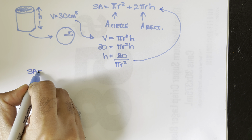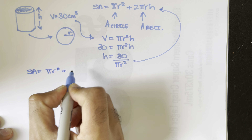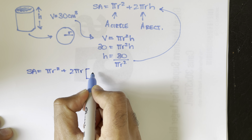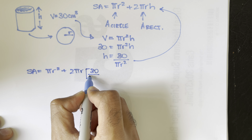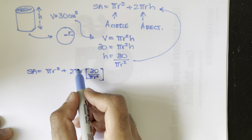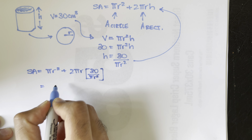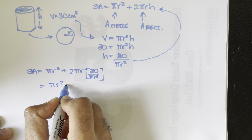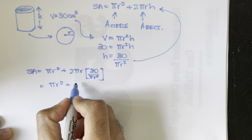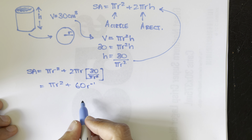We substitute h into the surface area function. We get surface area equals πr² plus 2πr times (30 / πr²). Cancelling the π's and removing one r, we get the simplified function: SA = πr² + 60/r.